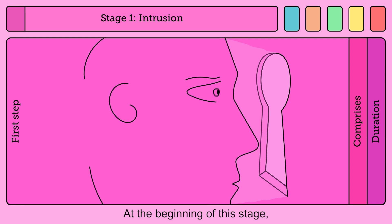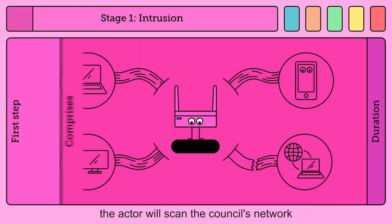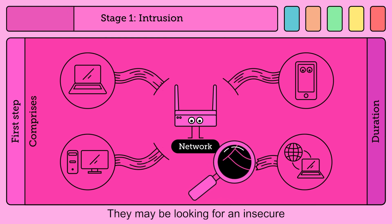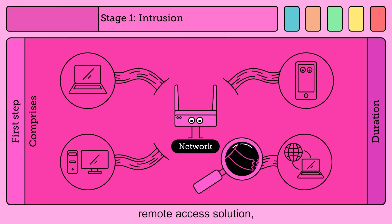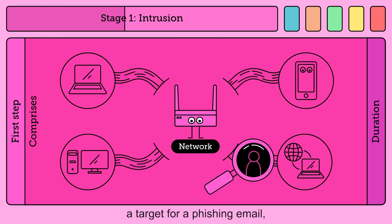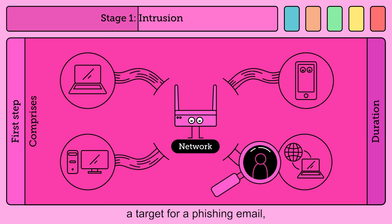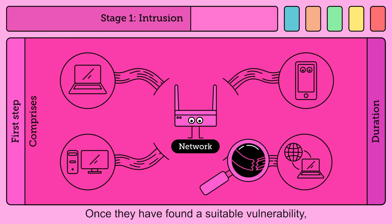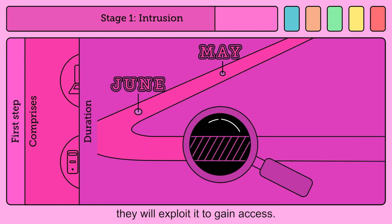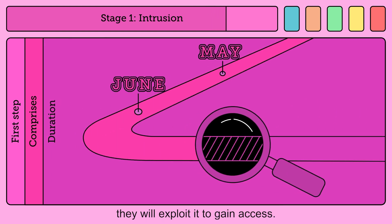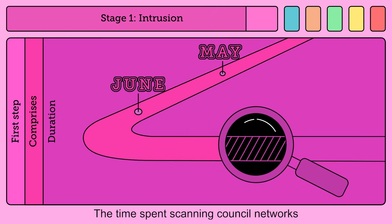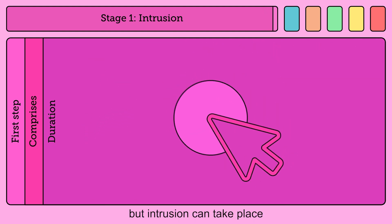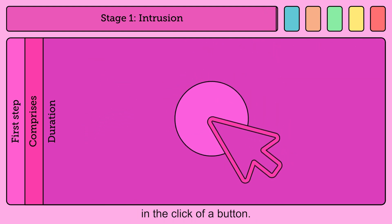At the beginning of this stage, the actor will scan the Council's network for potential vulnerabilities. They may be looking for an insecure remote access solution, a target for a phishing email, or weakness in an information system. Once they have found a suitable vulnerability, they will exploit it to gain access. The time spent scanning Council networks can be from moments to months, but intrusion can take place in the click of a button.